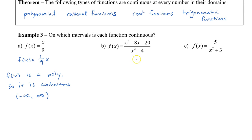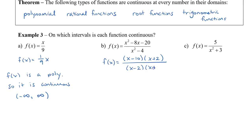The second one is a rational function. What we need to do, just so that we can see where the division by zero occurs, we need to do some factoring. I'm going to factor the numerator, which becomes x minus 10 and x plus 2. And also I'm going to factor the denominator, so I have x minus 2 and also x plus 2. When I simplify, the x plus 2s will cancel off, and I have x minus 10 divided by x minus 2. This is a rational function, so f is a rational function. It is continuous on its domain.